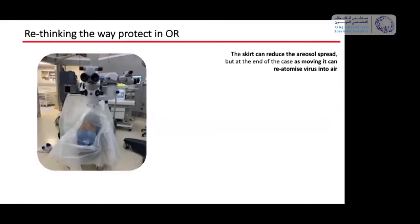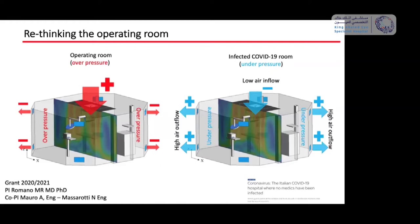At the slit lamp, it is important to use a breath shield to reduce aerosol spread. However, we need to keep in mind that as we move this protection, we can re-atomize the virus into the air. We are now working on a project creating negative pressure inside the operating theater — with low air inflow but high air outflow. This negative pressure does not allow the aerosol to escape, and it is immediately eliminated through the high air outflow channels. Another group in Italy already has good results with this approach.